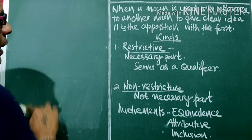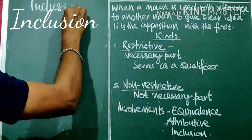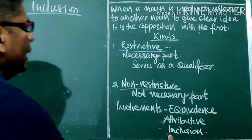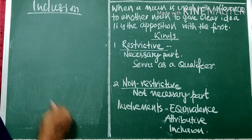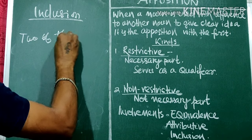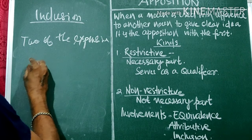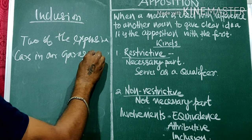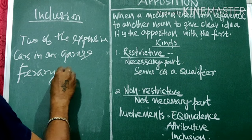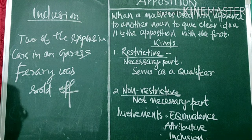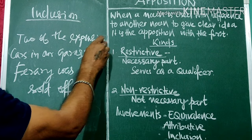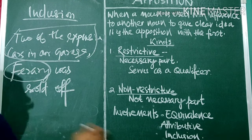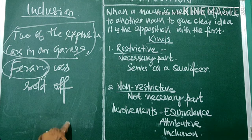The third category is inclusion. In inclusion, the second Apposition is already included within the first. For example: 'Two of the expensive cars in our garage, Ferrari, was sold.' Here 'Ferrari' is included within 'the expensive cars in our garage.' So inclusion means the second Apposition is already included in the first.